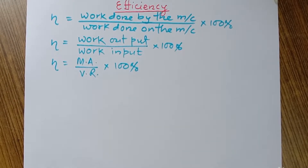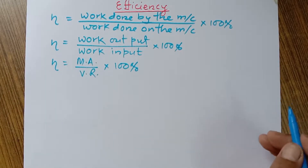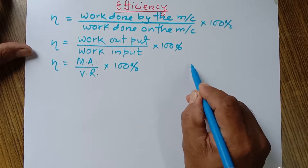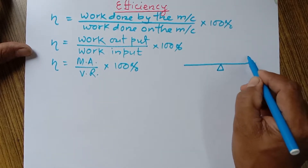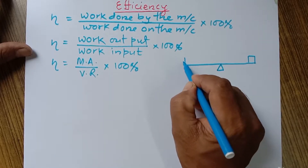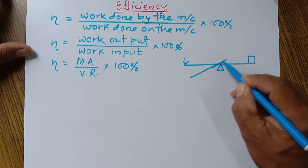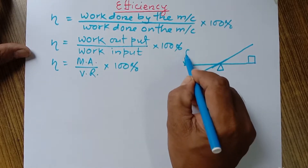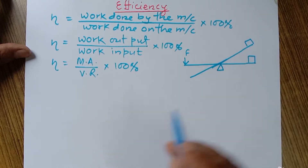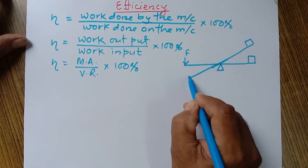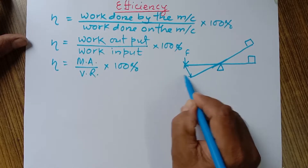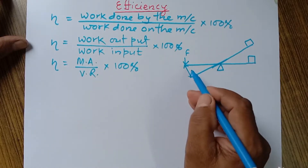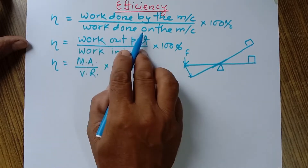Now I want to explain what efficiency means with a more meaningful understanding using an example of a lever. If we have a fulcrum and we need to raise a load, we apply effort at one end. When the effort is applied the lever turns and the load is raised. The effort force covers a certain distance — this displacement represents the work done on the simple machine, which is the work input.